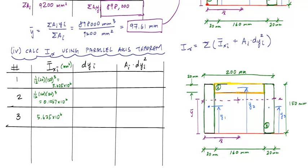The DYI represents the distance from the centroid of an area to the centroid of the entire cross section. So really, this distance right here would represent DY2. This distance, this vertical distance right here, would represent DY1. And similarly, this distance right here would represent DY3.